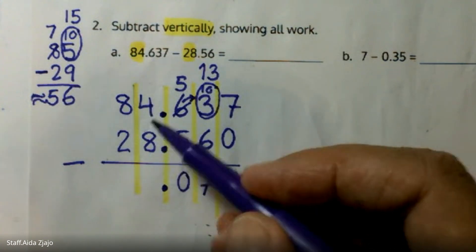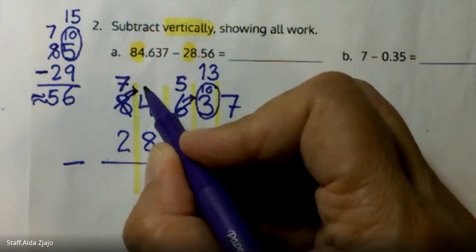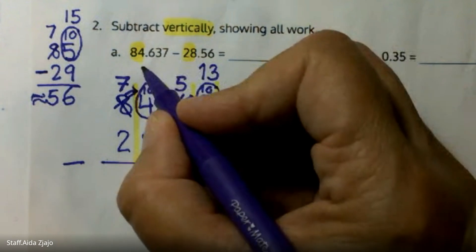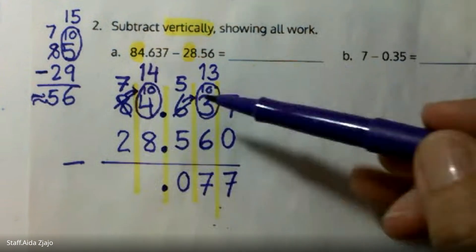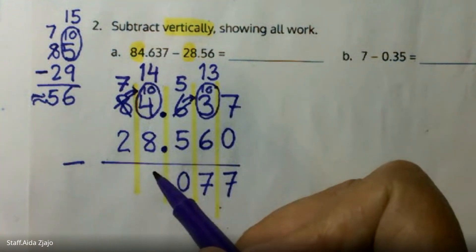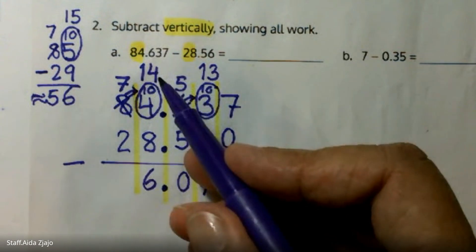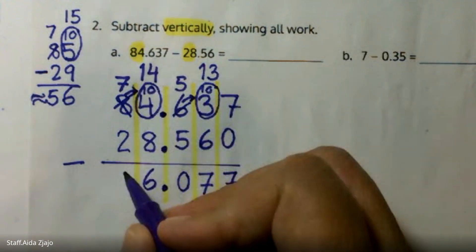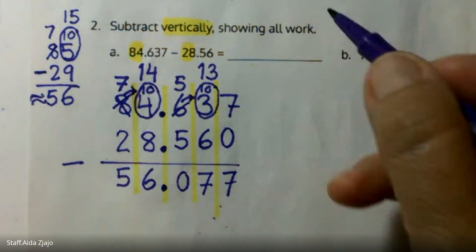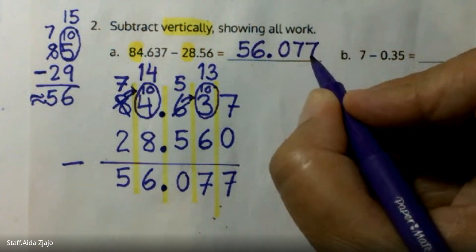If I have 4 ones and need to give 8 ones, I don't have enough, so I'm going to regroup the tens. I have 7 tens left; the one ten I borrowed gives me 10 ones — together with 4 that I had, that's 14 ones. So I can give you 8 ones. 14 minus 8: counting 9, 10, 11, 12, 13, 14 — it's 6, and 6 plus 8 is 14. Then 7 minus 2 is 5, because 5 plus 2 is 7. My answer is 56 and 77 thousandths.